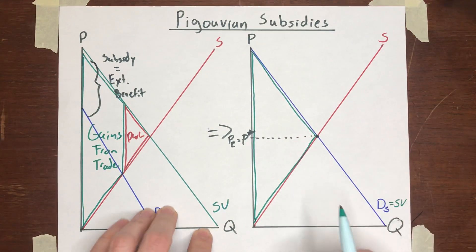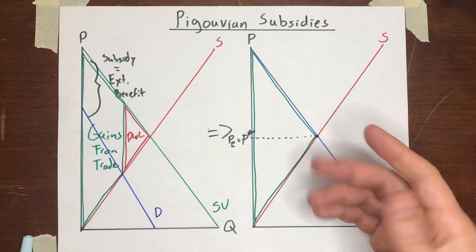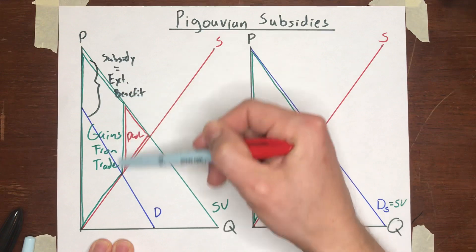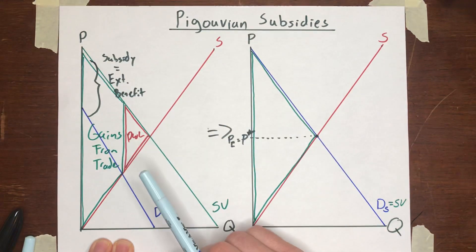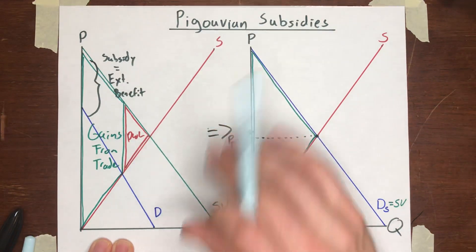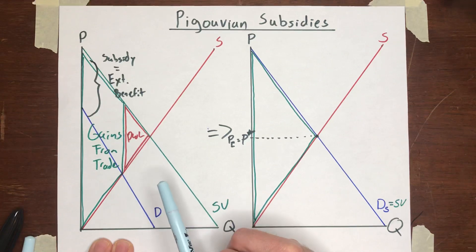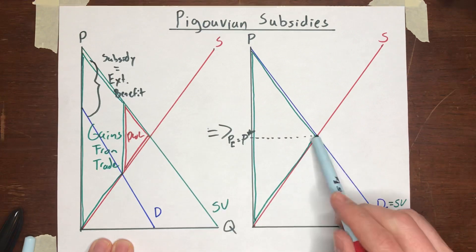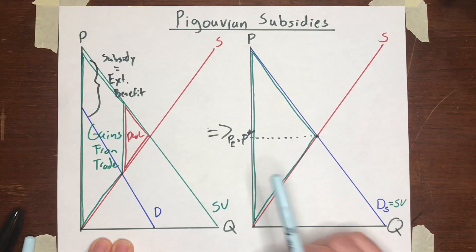And once again, the beauty of this kind of a system is its simplicity. Government doesn't have to order anybody around, doesn't have to tell them what to do. The only knowledge that the government needs is the knowledge about what is the external benefit per unit. They give that subsidy, they offer that subsidy to the buyers and then they just let the market do what it wants to do. And that will make the market efficient. So that is it for Pigouvian subsidies.